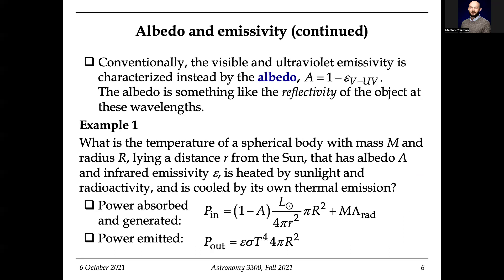We're going to define the albedo, which is related to the emissivity: albedo equals one minus the emissivity. So the albedo is like the reflectivity. Let's do an example. What is the temperature of a spherical body with mass M and radius R at a distance little r from the sun, with an albedo and emissivity — heated by sunlight and radioactivity, and cooled by its own thermal emission?